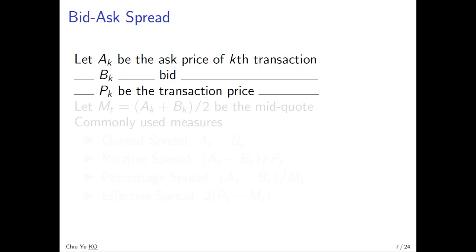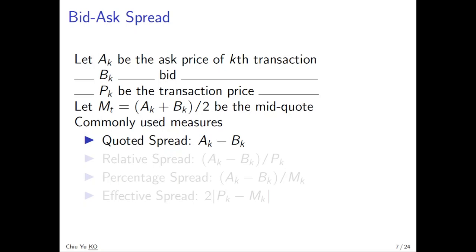P_k is usually either A_k or B_k, or sometimes maybe in between, but most of the time it is either A_k or B_k because when someone tries to buy, it appears as A_k, and when someone tries to sell, it is usually at B_k. We let M_k be the mid-quote, which is (A_k + B_k) / 2.